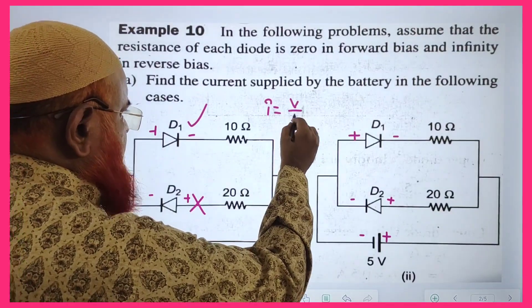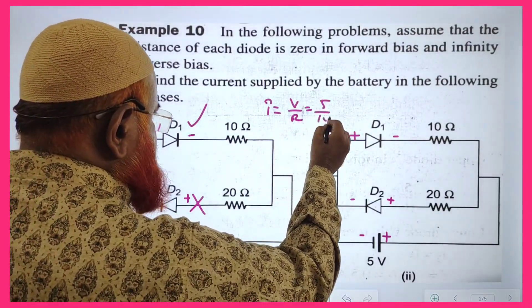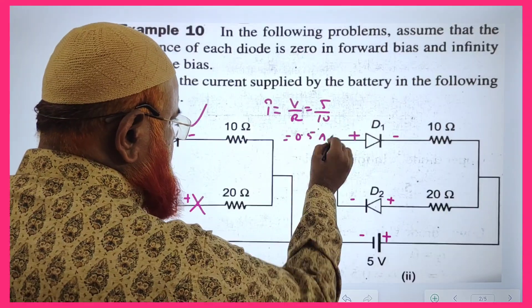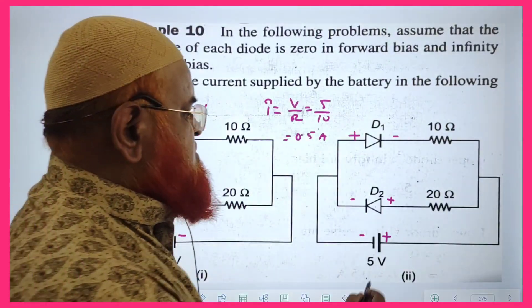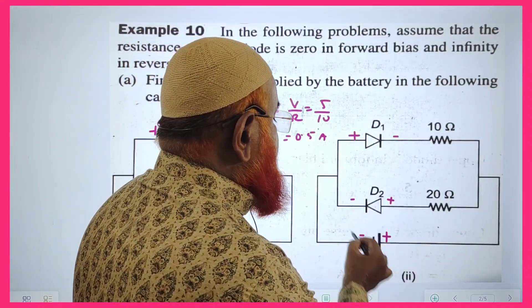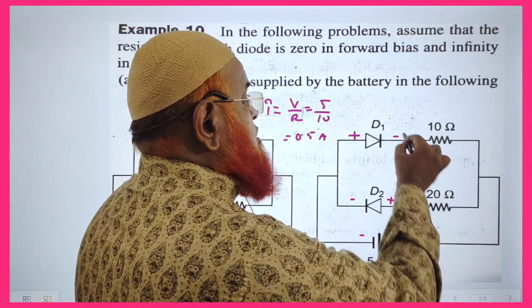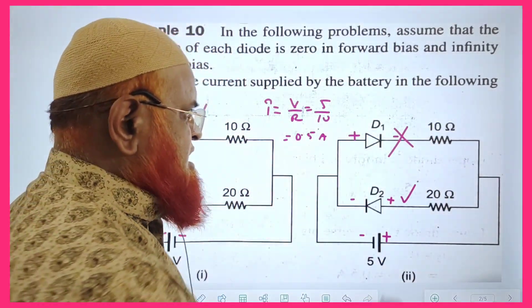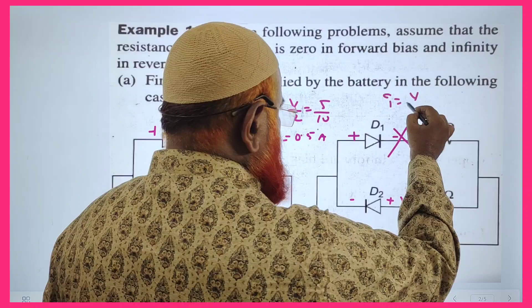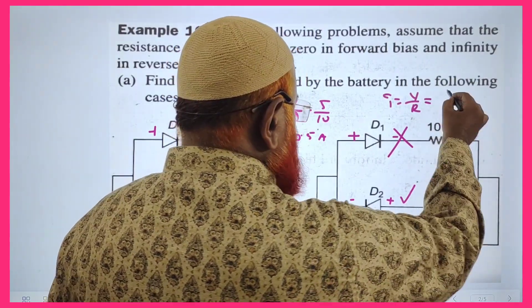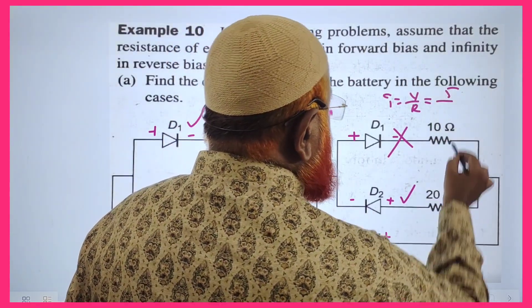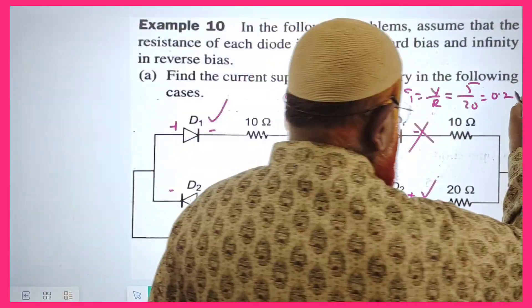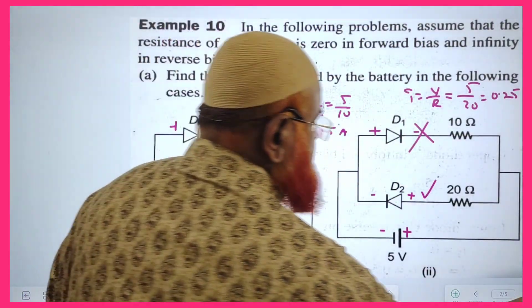Current I is equal to V by R, which is 5 divided by 10, which is 0.5 amperes. In this case, positive is connected to positive and negative to negative — this is forward bias, this conducts. So current I is equal to V by R: V is 5, R is 20, which gives 0.25 amperes.